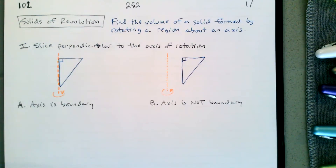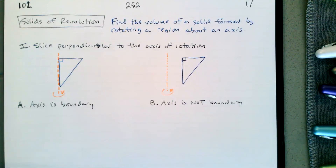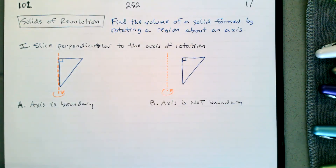Today we're going to continue finding the volume of a solid formed by rotating a region about an axis. Our first strategy is to slice perpendicular to the axis of rotation. When we slice perpendicular to the axis of rotation, we have to consider two cases: one where the axis is a boundary of the region, and another where the axis is not a boundary of the region.